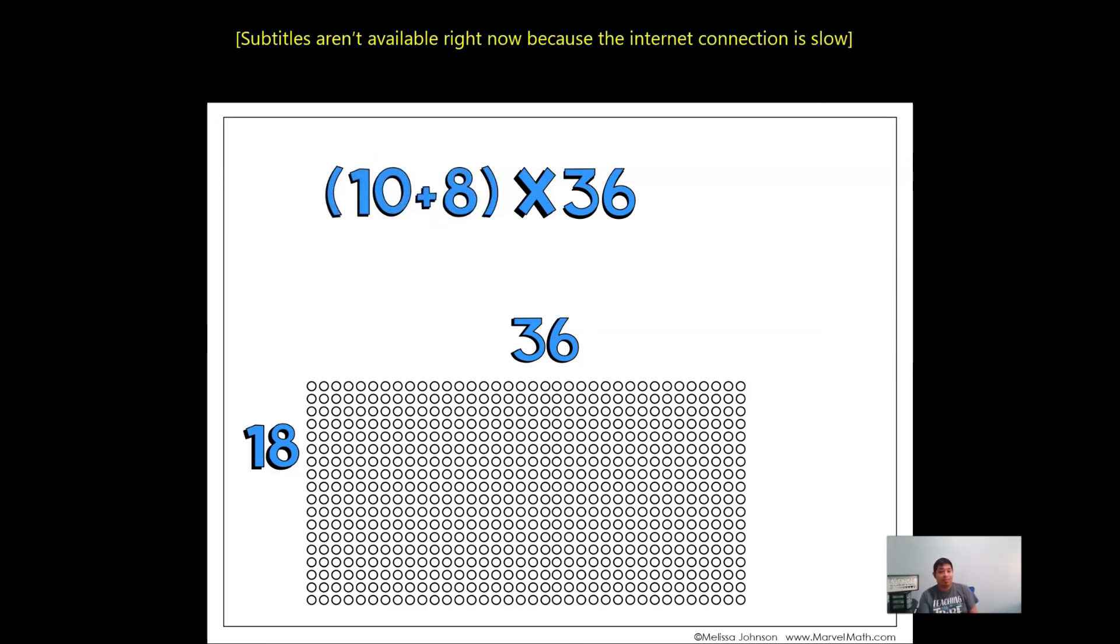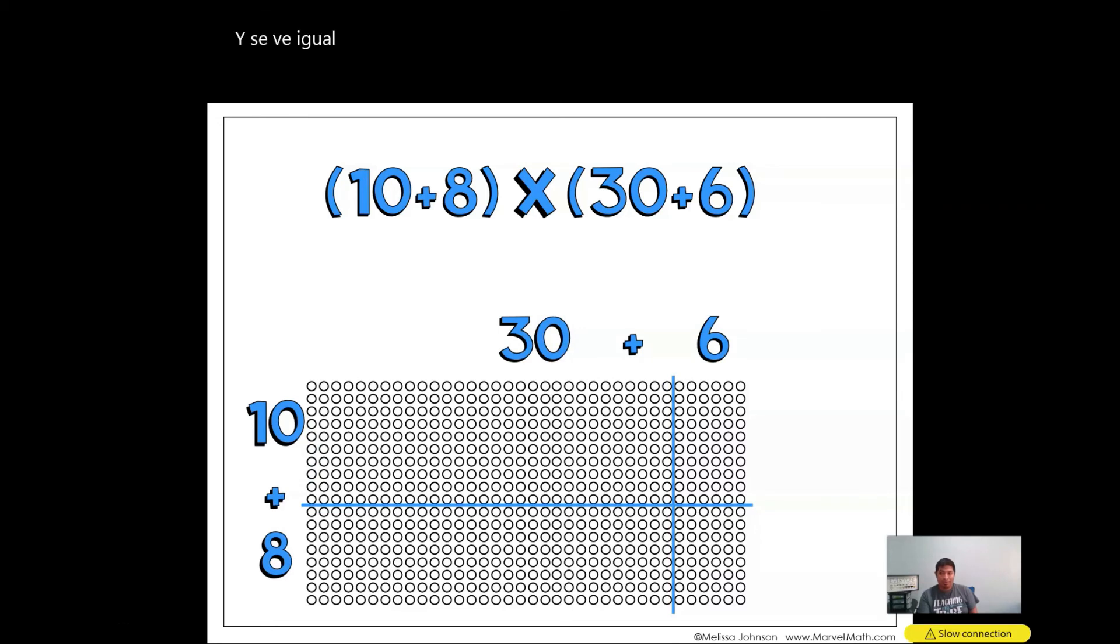Now the sophisticated way is that we break both factors. 18 turns into 10 plus 8 and 36 turns into 30 plus 6. And we just break them apart. And then we draw our lines. And it looks just like the area model.